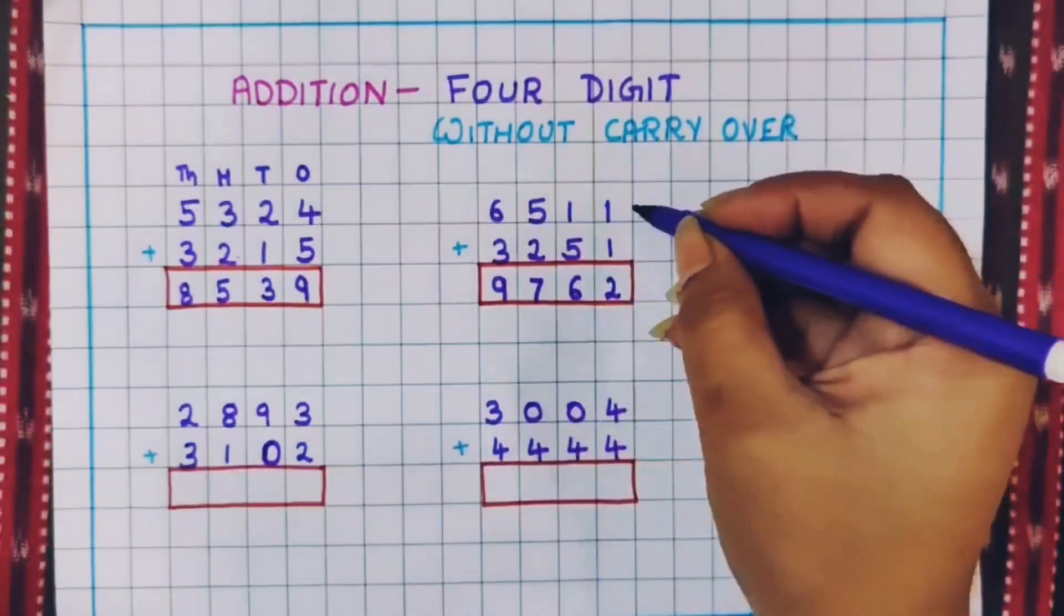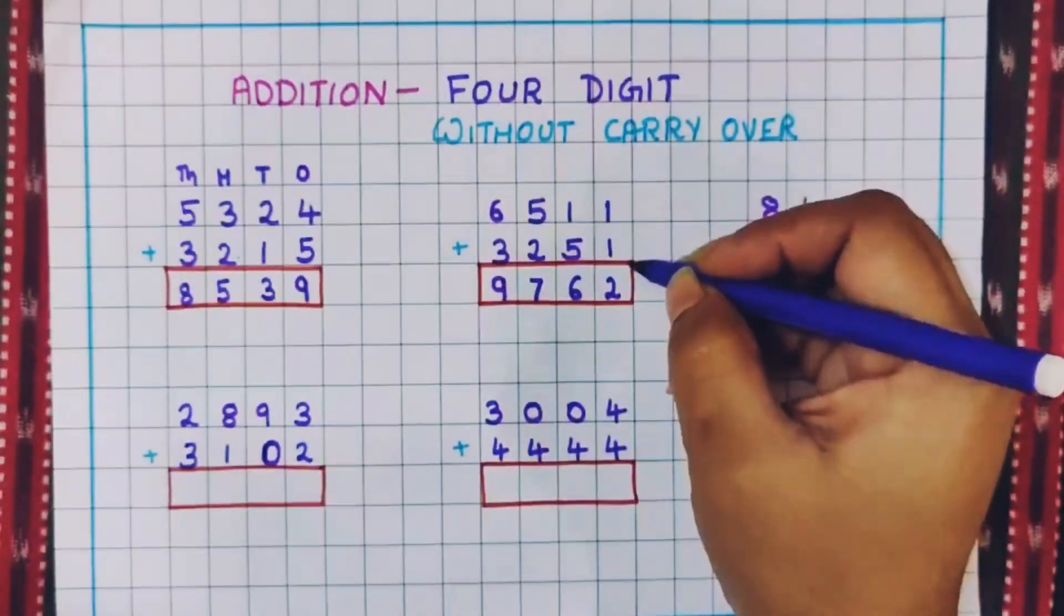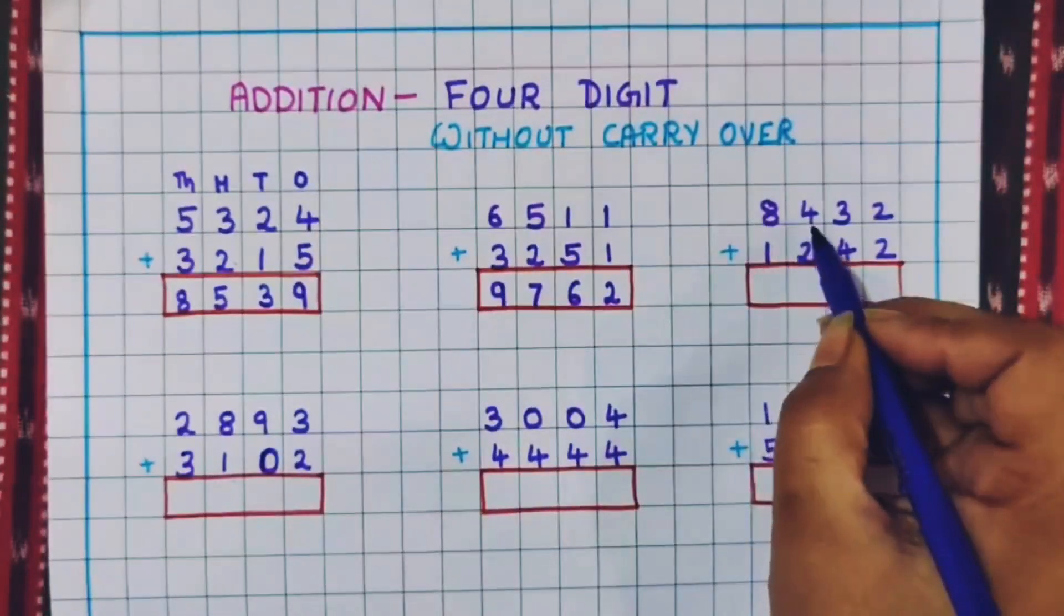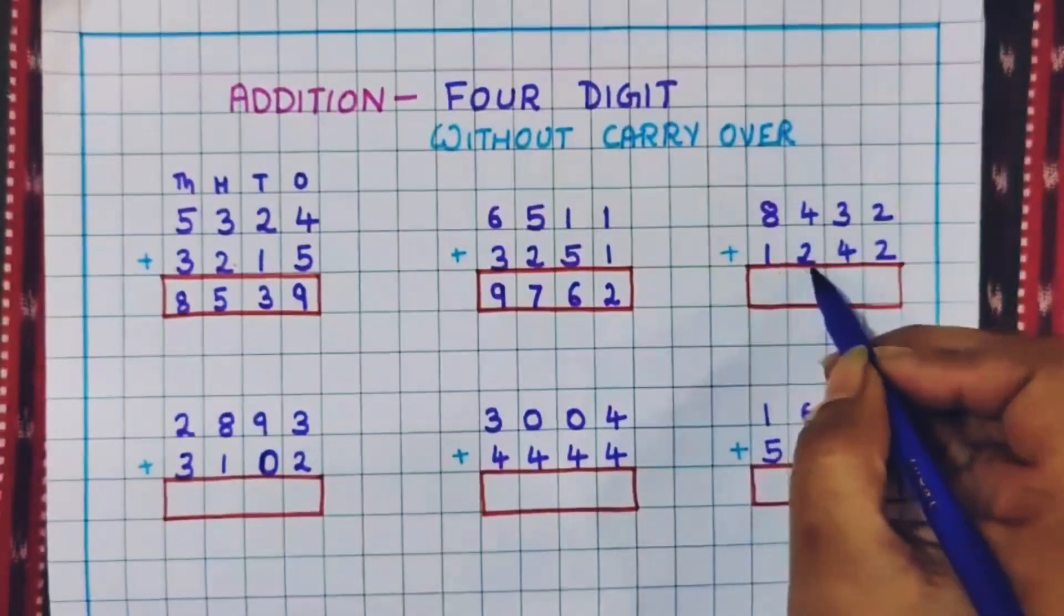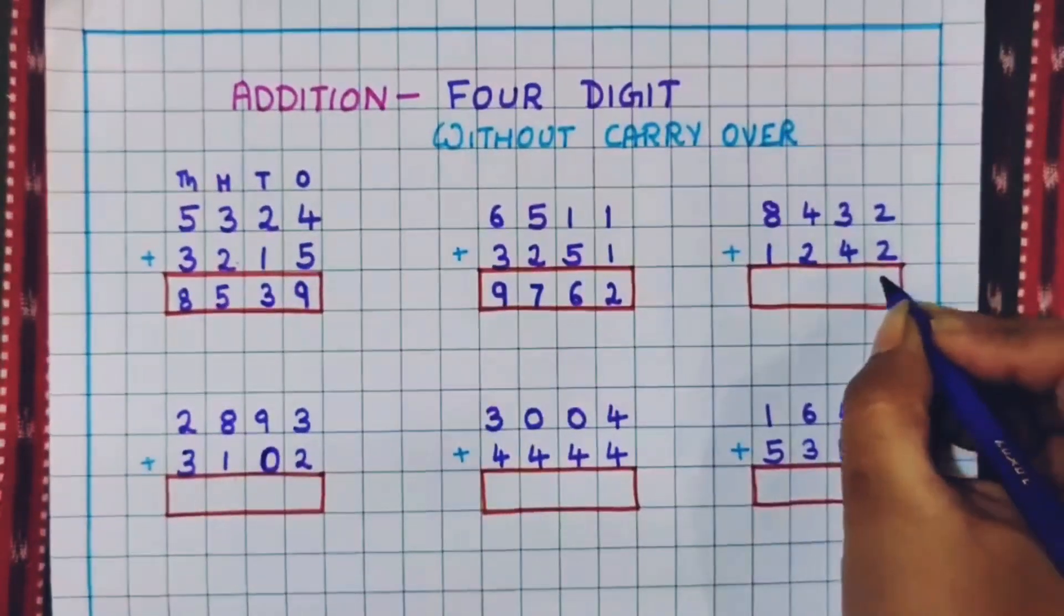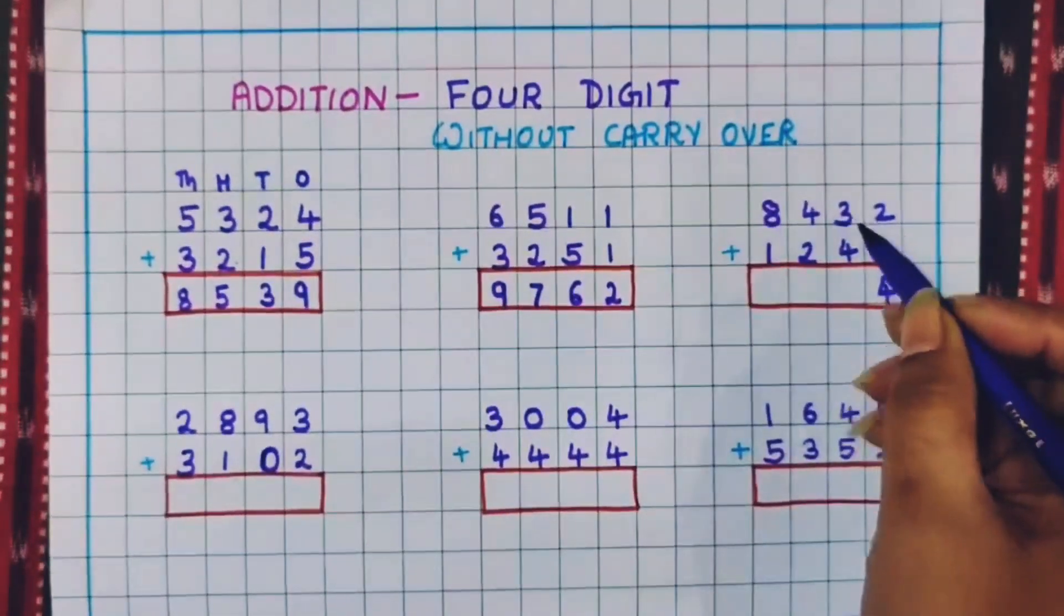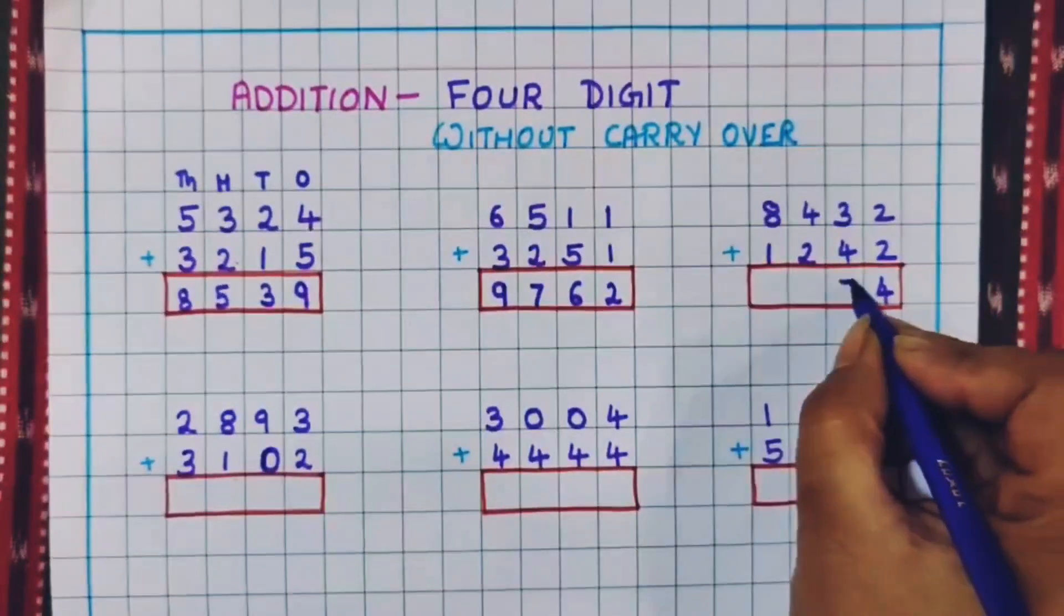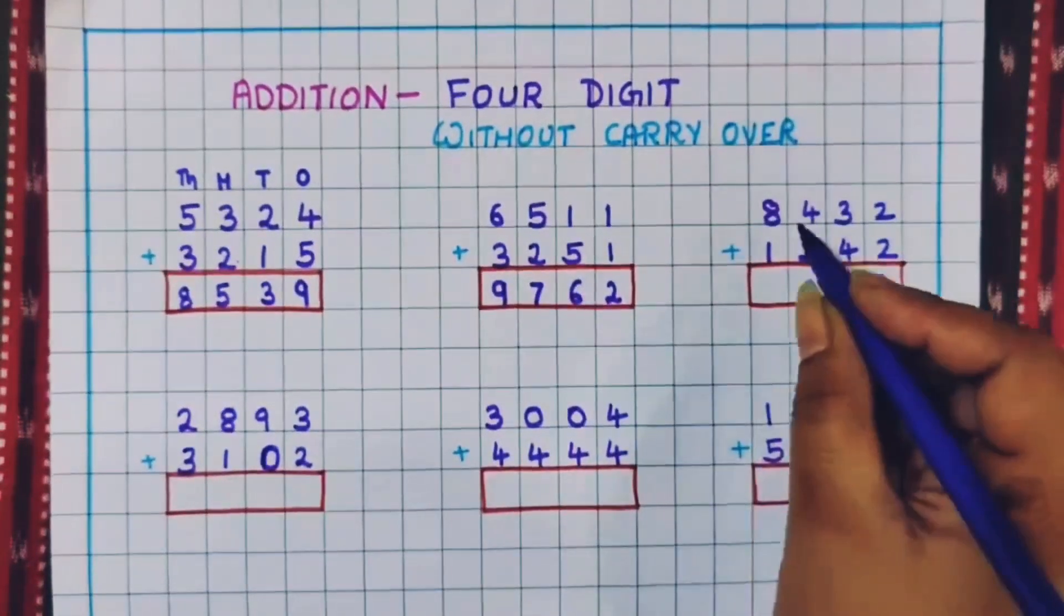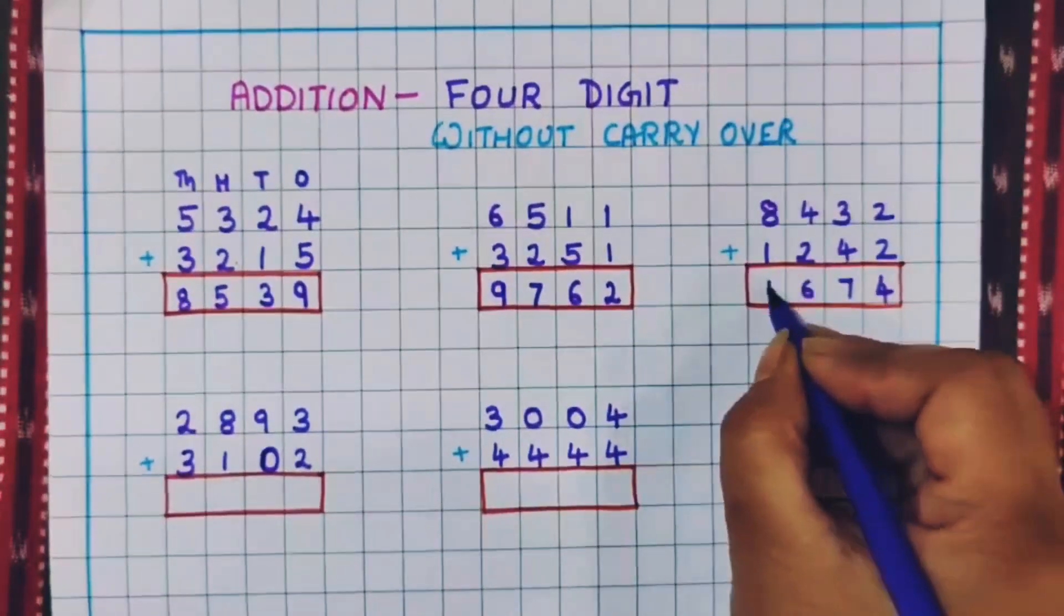Always we will start the addition from ones place. Now let's do one more problem. 8,432 plus 1,242. So 2 plus 2 is 4. 3 plus 4 is 7. 4 plus 2 is 6 and 8 plus 1 is 9.